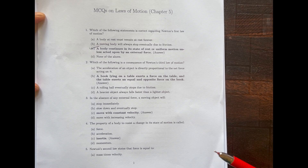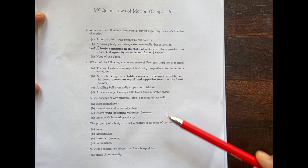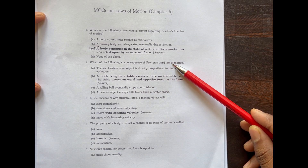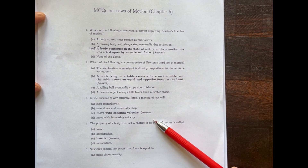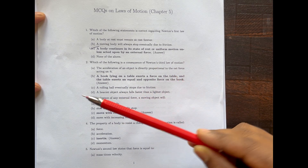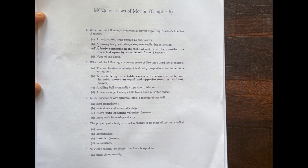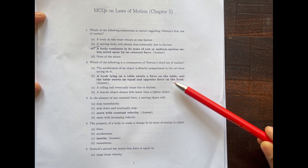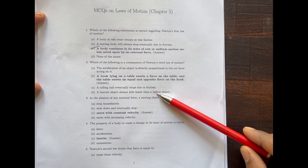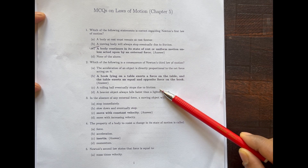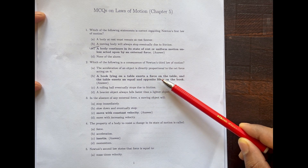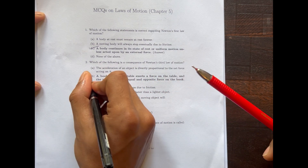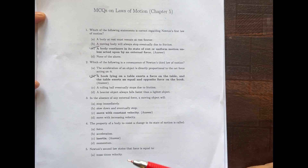Next question: Which of the following is a consequence of Newton's third law of motion? A body lying on a table exerts a force on the table, and the table exerts an equal and opposite force on the book. This is Newton's third law of motion.